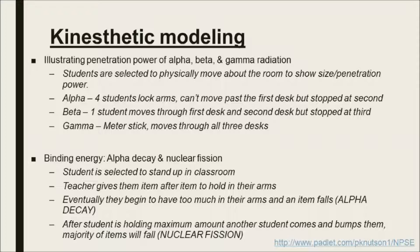When we get into radiation types, I like to get the kids up and moving. For alpha, beta, and gamma radiation, students physically try to move about the room. The alpha particle is represented by four students who lock arms — they can move through a wide gap between desk rows but not smaller ones. One student represents the beta particle and can move further but is stopped at a smaller gap. I use a meter stick to represent the gamma ray, which can travel quite a bit farther before finally being stopped.